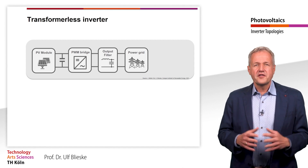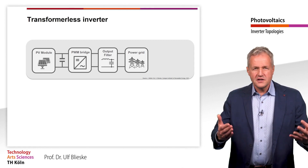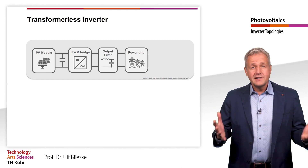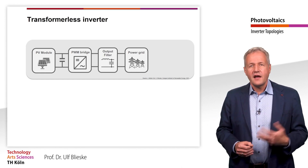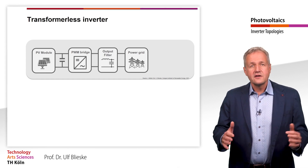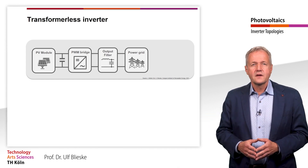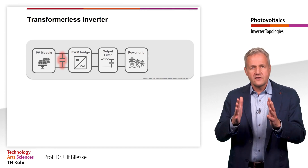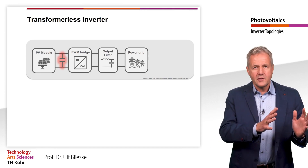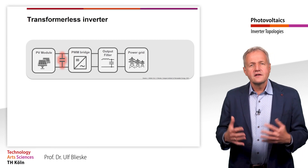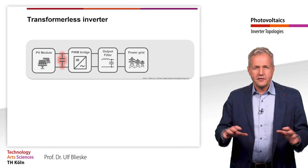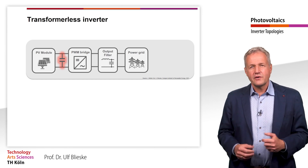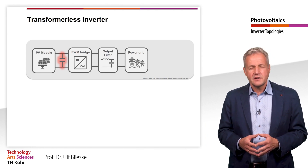The direct current of the PV modules is converted into a sinusoidal alternating voltage by a PWM bridge circuit, and the circuit signal is then smoothened. You can also see a capacitor between the solar generator and the bridge circuit. This capacitor serves as a buffer — among other things, it compensates for fluctuations in the solar generation.